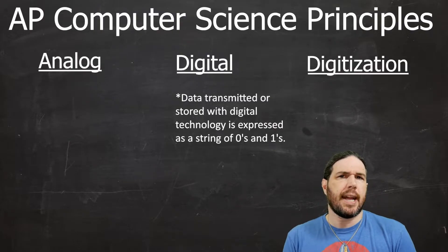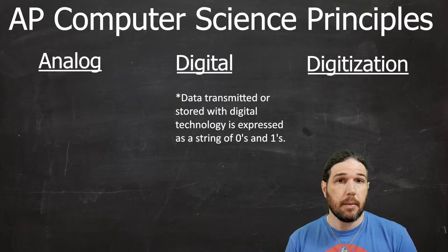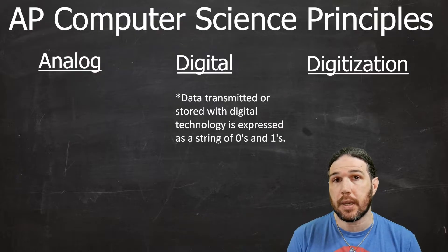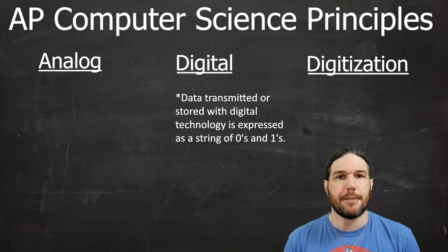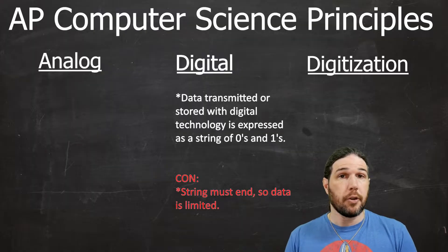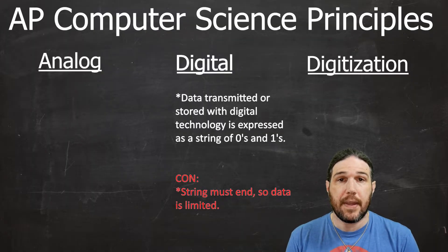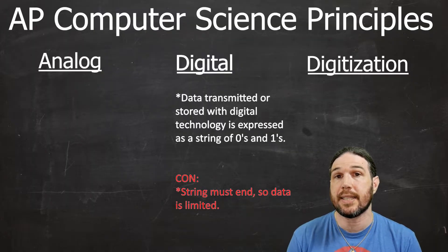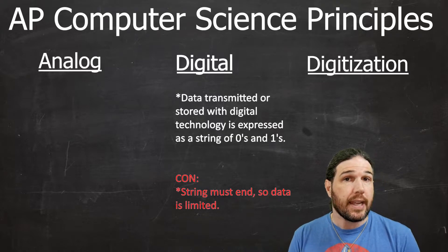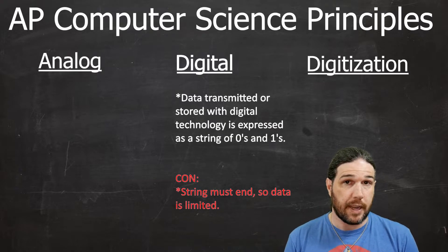Digital media has some pretty big upsides, which we'll talk about in a bit, but its biggest limitation is that it's finite. We've already seen that all computers, no matter how advanced, have some number of bits that they can process, and after that it's too many, and you get things like overflow errors and round-off errors.